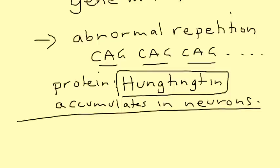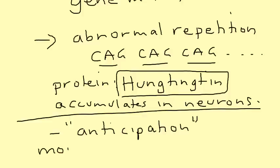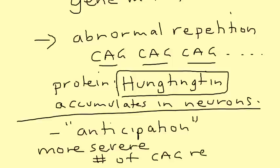There's a very important genetic concept known as anticipation — very important to remember. Because Huntington's disease is passed on from generation to generation, with each successive generation the disease can become more severe. The reason it becomes more severe is because the number of CAG repeats increases. More CAG repeats means earlier onset and more severe disease. That concept is known as anticipation.